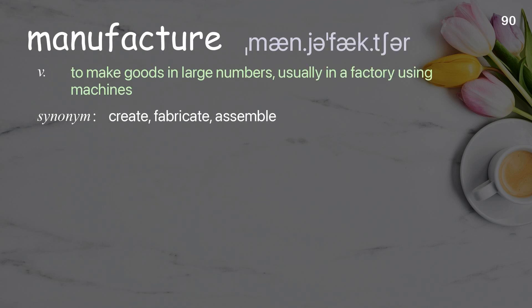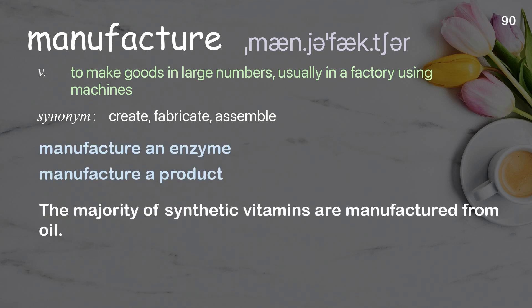Manufacture: to make goods in large numbers, usually in a factory using machines. Examples: manufacture an enzyme; manufacture a product. The majority of synthetic vitamins are manufactured from oil.